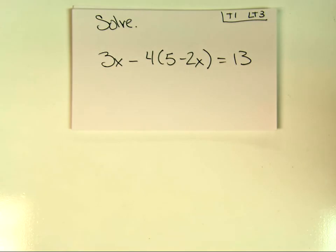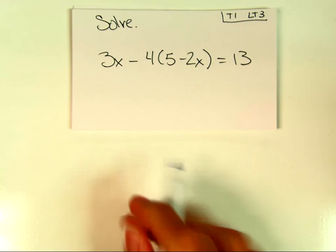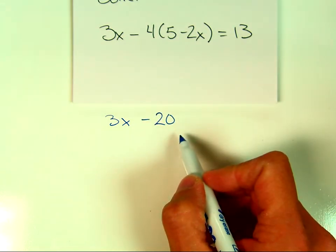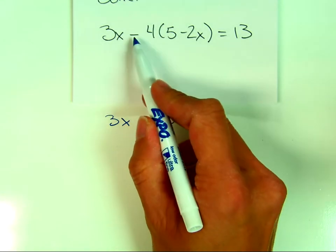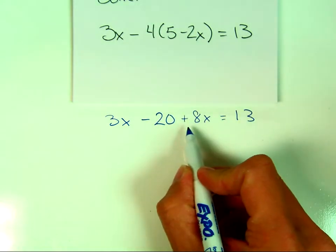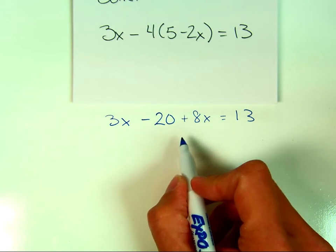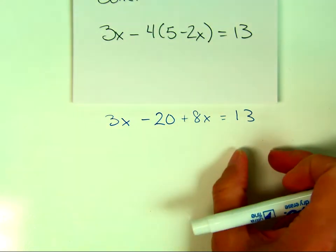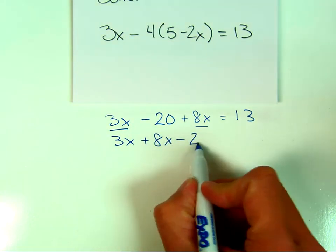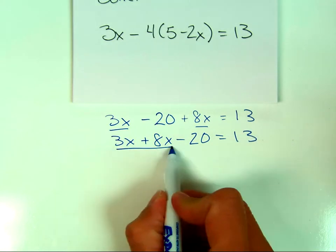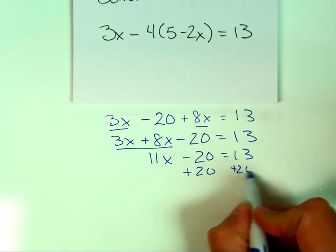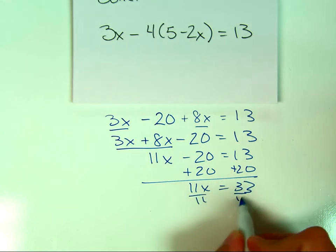Learning target three: solving equations where x is on one side. First, get rid of parentheses. Watch out — negative four times negative two gives positive eight x. After distributing, combine like terms: 3x plus 8x is 11x, giving 11x minus 20. Add 20 to both sides to get 11x equals 33, then divide both sides by 11 to get x equals 3.